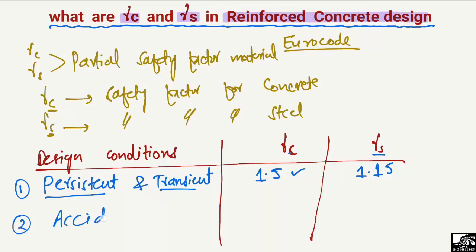In the second case, the accidental design condition, we take the value of gamma_C equal to 1.2 and gamma_S equal to 1.0.